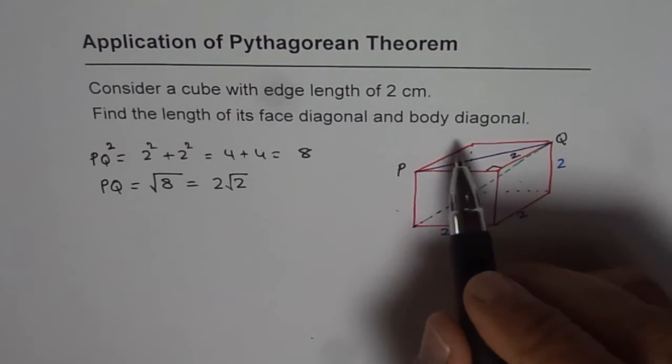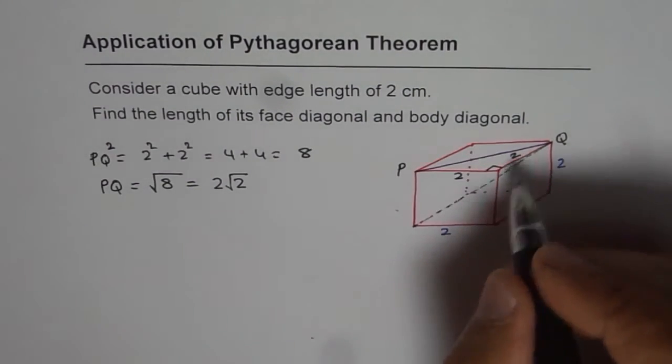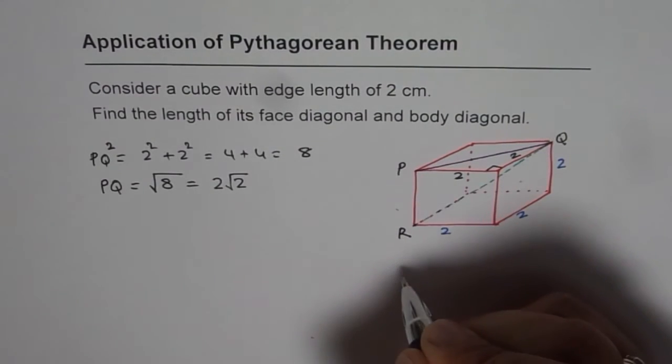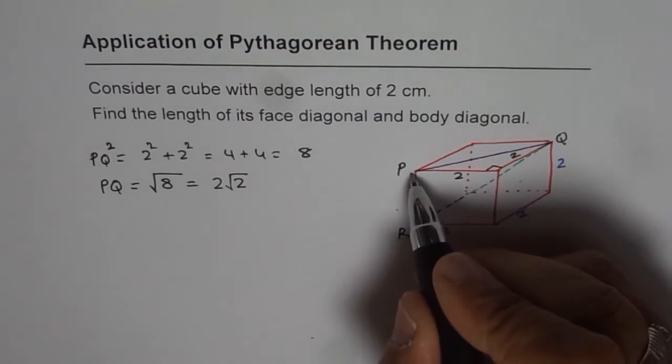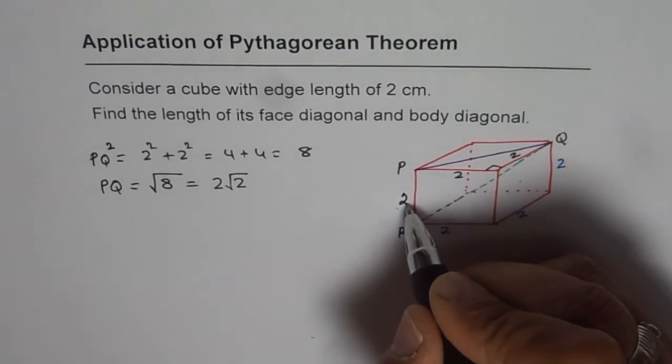Now to find the body diagonal, what we can consider is the triangle. Let me say this is R for us. So in this triangle PQR, we know P and R is also 2.